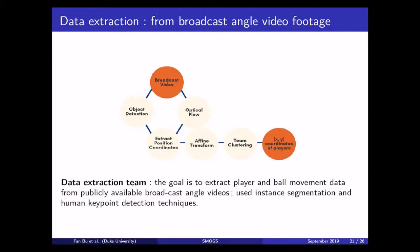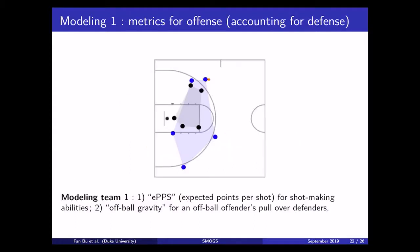So the data extraction team actually set out to do what the previous speaker has already done. But of course, they're just undergraduate students. Their goal is to extract player movements and ball movements from broadcast angle, publicly available video footage of basketball games. They actually made some very delightful and quite tremendous progress using CV techniques, including instance segmentation and the human key point detection. So they can actually separate the players from the audience in the stands by cropping out the court, so that they don't suffer from recognizing too many people in a video frame.